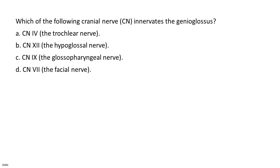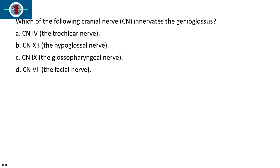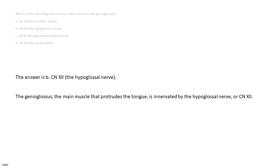Which of the following cranial nerves innervates the genioglossus? A. CN4, the trochlear nerve. B. CN12, the hypoglossal nerve. C. CN9, the glossopharyngeal nerve. D. CN7, the facial nerve. The answer is B, CN12, the hypoglossal nerve. The genioglossus, the main muscle that protrudes the tongue, is innervated by the hypoglossal nerve, or CN12.